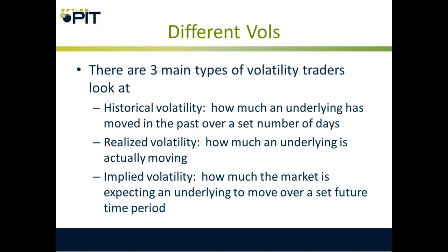There are three main types of volatility. There's historical volatility — that's how much an underlying has moved in the past. Historically the S&P has done this, historically Apple has moved this much, the last 20 days it has moved this, the last 30 days it has moved this. Then the next one is realized volatility — that's how much something is moving right now, the very recent past. Then there is implied volatility, and that's how much the market is expecting an underlying to move over a set future time period. Implied volatility is important — that is what the market thinks something is going to move.